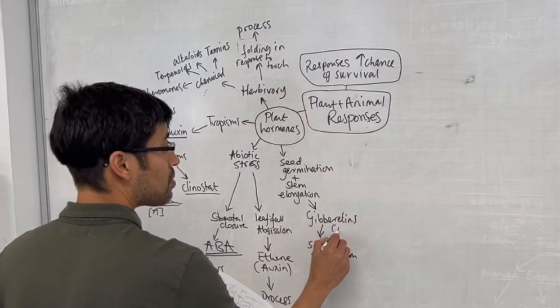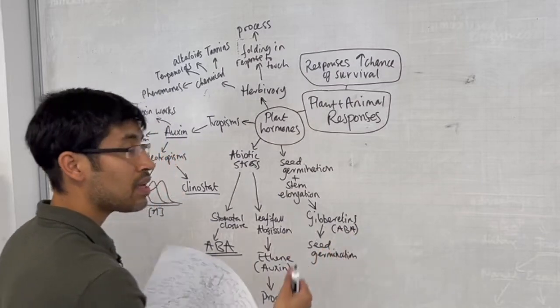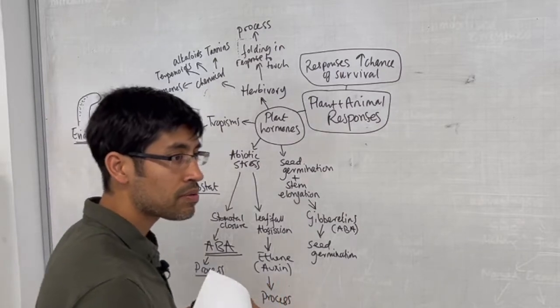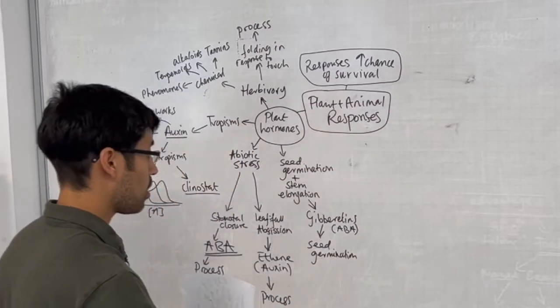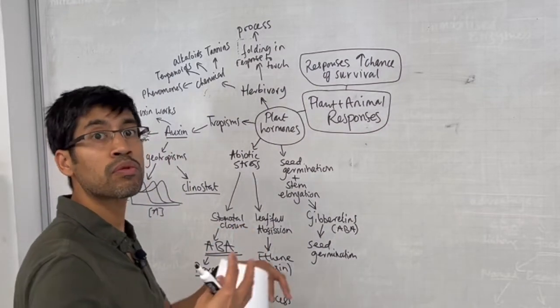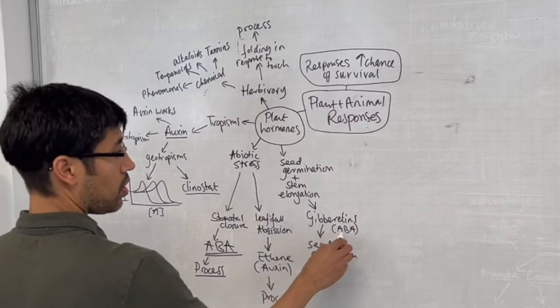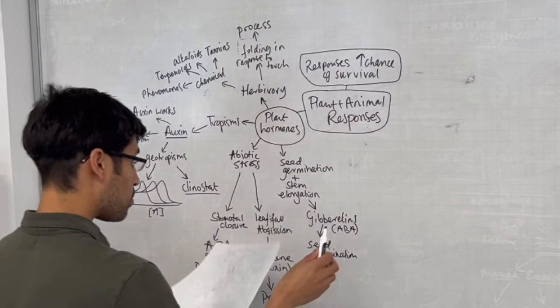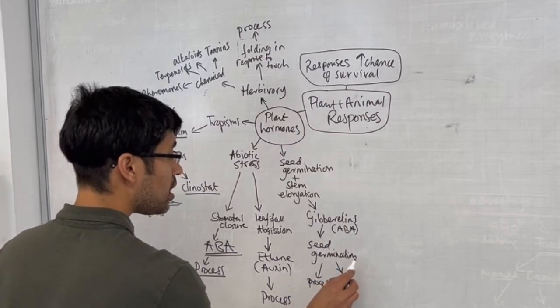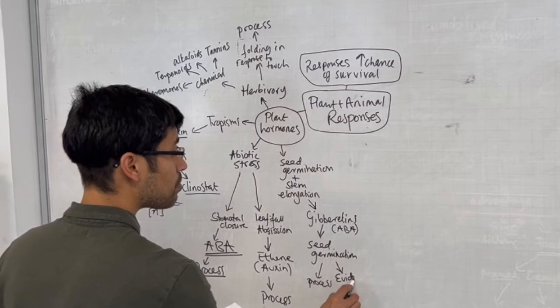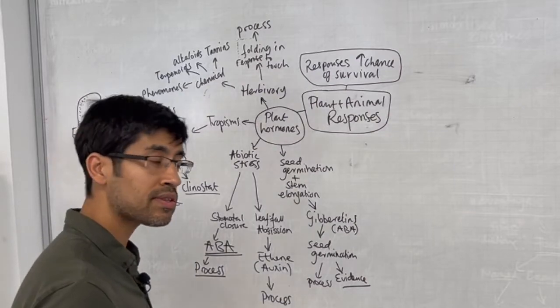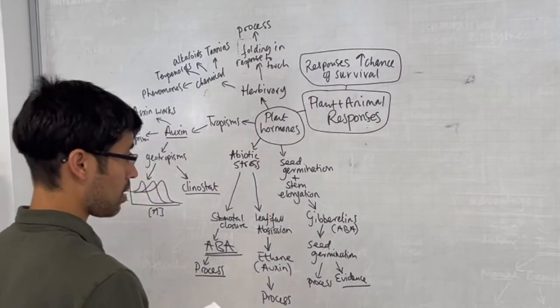In terms of seed germination, yes, know the process. Interestingly, abscisic acid is acting antagonistically to that process, which ties up with its role as a dormancy promoting hormone. Gibberellin is in opposition to that. It's a growth hormone. So seed germination, we need to know the process. But also we need to know the experimental evidence that gibberellins are involved in this seed germination process.